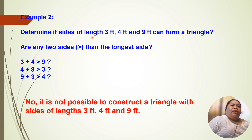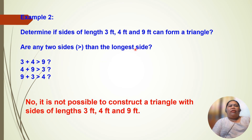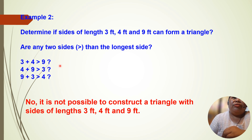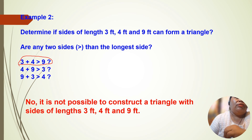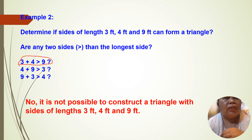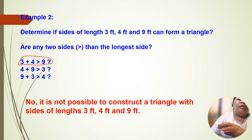Example number two: determine if sides of length 3 feet, 4 feet, and 9 feet can form a triangle. Are the two sides greater than the longest side? Let's see. 3 plus 4 is greater than 9? 4 plus 9 is greater than 3 — yes. 9 plus 3 is greater than 4 — yes. But 3 plus 4 is 7, which is never greater than 9. So, no, it is not possible to construct a triangle with sides of 3 feet, 4 feet, and 9 feet.